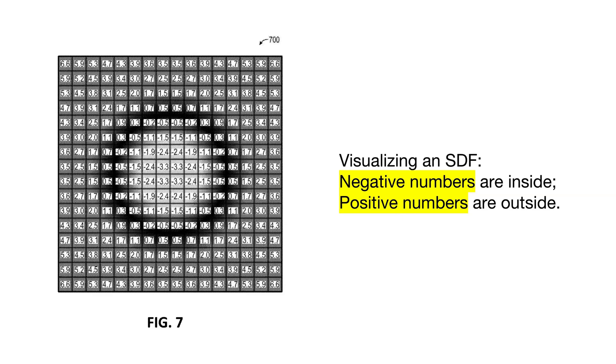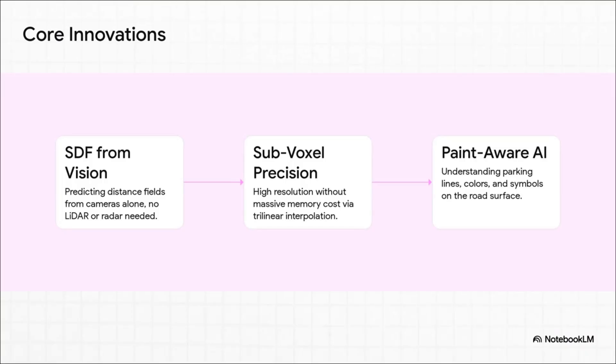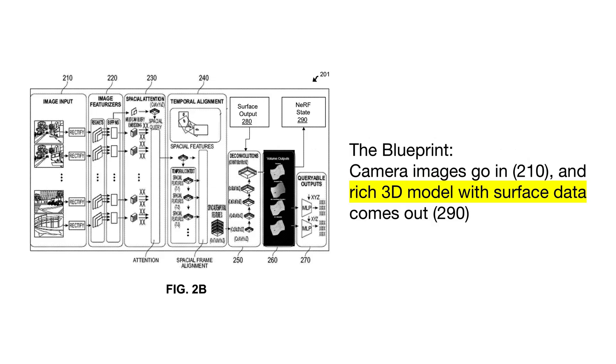Okay, so this entire system really stands on three pillars, three core innovations that are laid out in the patent. Let's break down the secret sauce and see how it all comes together. So the recipe for this secret sauce has three main ingredients. Number one: they had to figure out how to create these incredible 3D distance maps using nothing but camera images—no expensive lidar, no radar. Number two: they needed a really clever trick to get super high-resolution detail without needing, you know, a giant supercomputer in the trunk. And number three: they had to teach the AI to not just see shapes and objects, but to actually understand what they are—to know that a white line on the ground is a parking space divider.